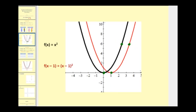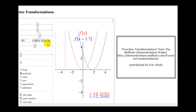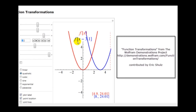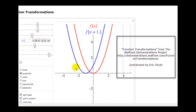Let's look at an animation of this. Here we have an original function in red, and as we change the value of c, we see the translated function in blue along with the function notation. When it's f of the quantity x minus 2.5, the blue function is shifted 2.5 units to the right. When we change to x plus a constant, such as f of x plus 1, the translated function is shifted to the left.